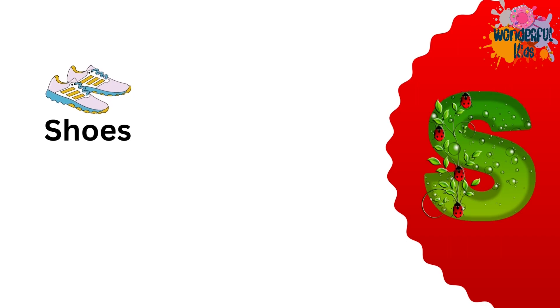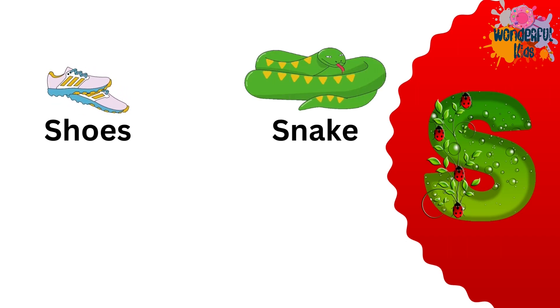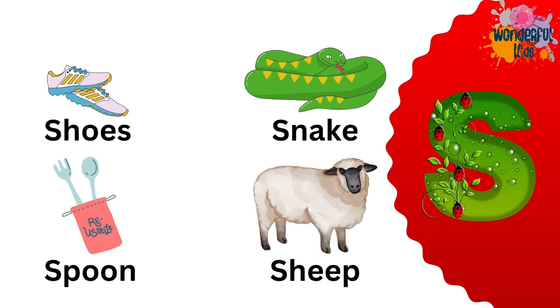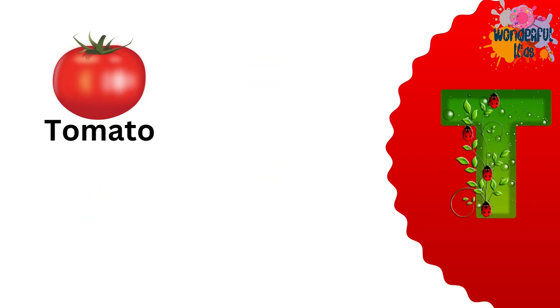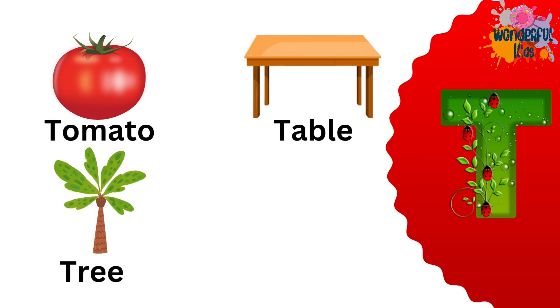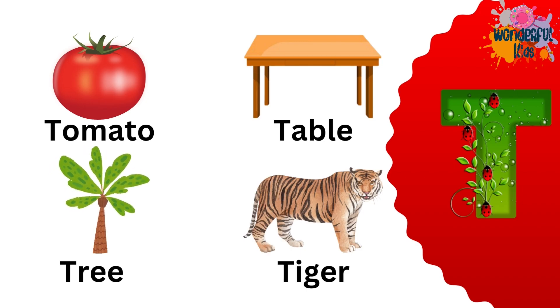S for sun. S for snake. S for spoon. S for sheep. T for tomato. T for table. T for tree. T for tiger.